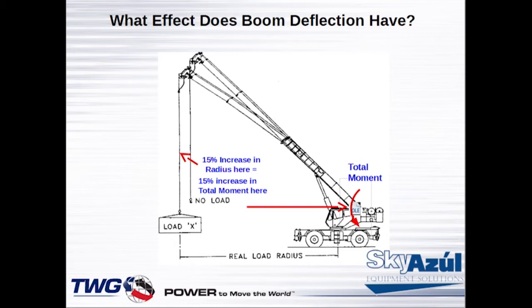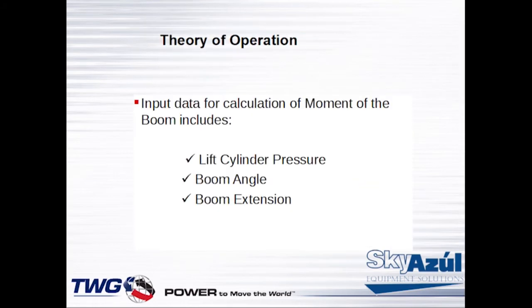The system formulates a number we call an F factor, which calculates deflection in the boom no matter what the length or angle is — one number does all of that. So the input data for the calculation of moment of the boom includes lift cylinder pressure, boom angle, and boom extension.